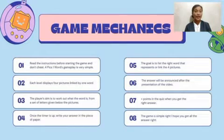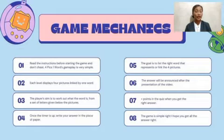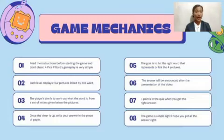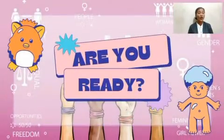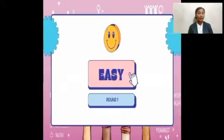Number 5, the goal is to list the right word that represents or links the 4 pictures. Number 6, the answer will be announced after the presentation of the video. Number 7, you get plus points in the quiz when you get the right answer. Number 8, the game is simple, right? I hope you get all the answers right. Are you ready? So we are going to start the game.